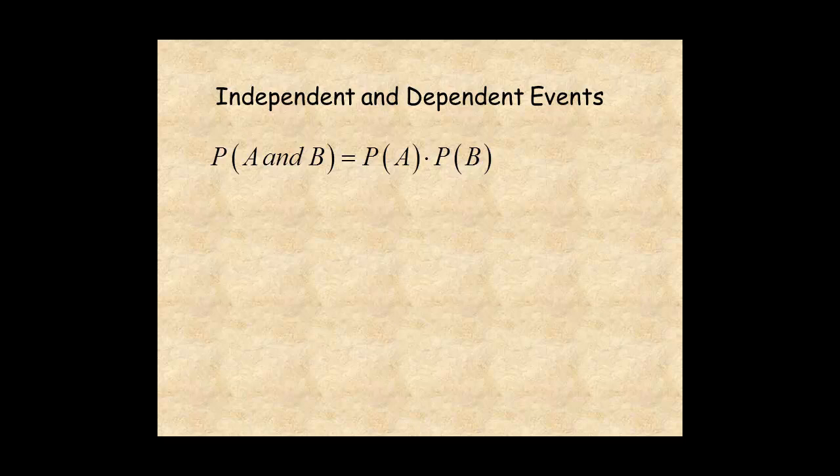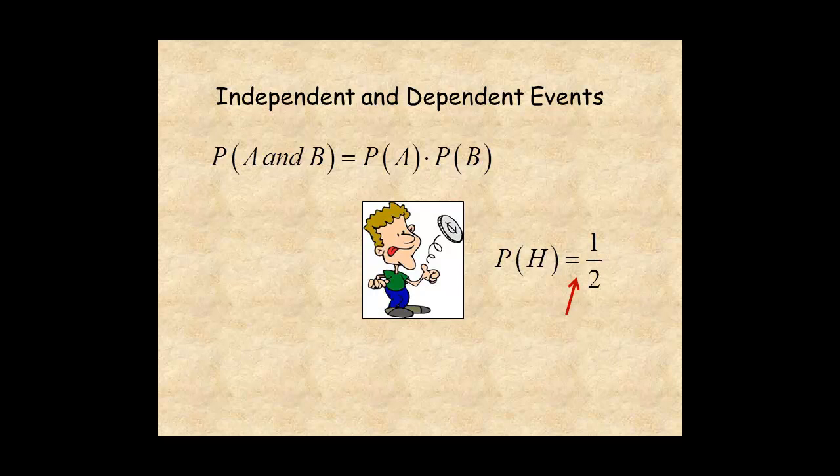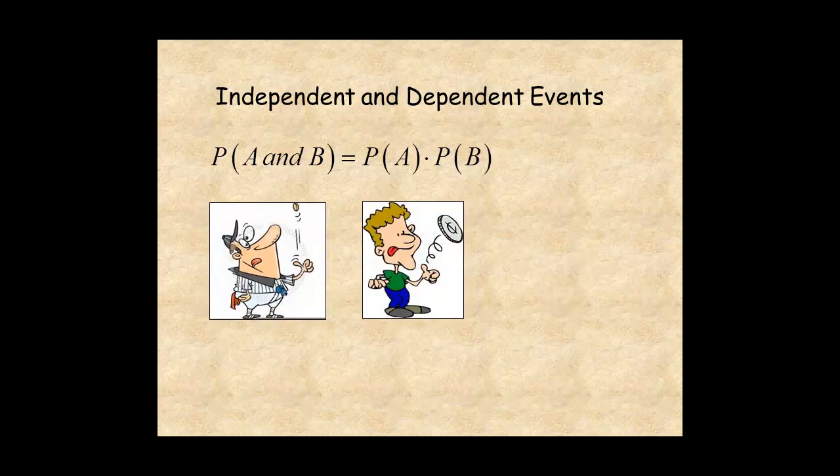For example, if you toss a coin, the probability of heads is one-half. So if you toss two coins, the probability of two heads is one-half times one-half, or one chance out of four.